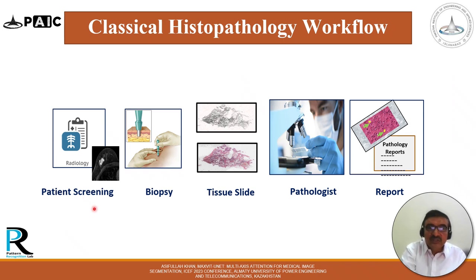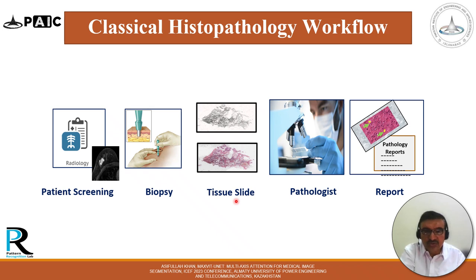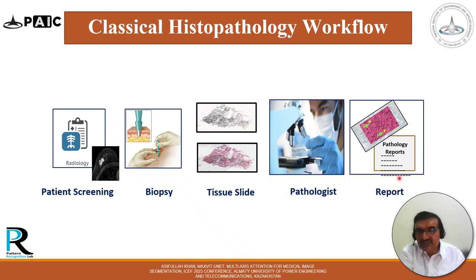The classical histopathology workflow begins with patient screening through X-ray or another technique. If a problem is found, a biopsy is taken — a tissue sample from the particular organ. That tissue sample is placed on a slide, and the tissue slide is studied under the microscope by the pathologist. This is a tedious and time-consuming step; however, the pathologist gives a report at the end of the day.